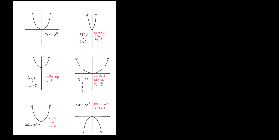Here are some examples: f of x squared is the upright parabola. Two times f of x is vertically stretched by 2, making it narrower. f of x plus 2, that is x squared plus 2, shifts up by 2 units. f of x minus 2 shifts down by 2 units. Negative f of x is negative x squared, flipped over the x-axis — upside down. And multiplying f of x by 1 half gives a vertical shrink by 1 half.